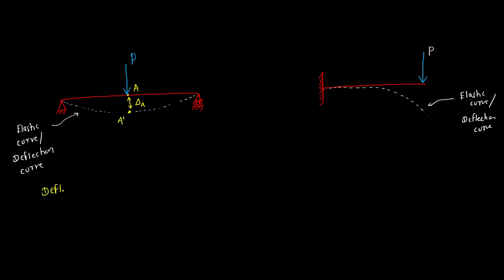Deflection is denoted by the symbol delta. Similarly, for the cantilever beam, taking point A — after loading the same point is present at A dash, and this distance is the deflection at point A. Now, what is the deflection at the support points? If point B is a support, deflection at B is zero, because the original and final positions of point B are the same. Similarly, deflection at point C is also zero.